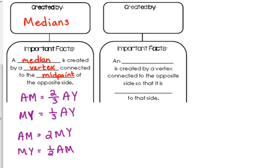All those relationships are saying the same thing, and it depends on what information you're given. If they give you MY and ask for the entire median, use MY = one-third of AY. If they give you AM and ask for MY, use the last relationship. That applies to all three medians — BZ and XC as well. They all have the same relationships.